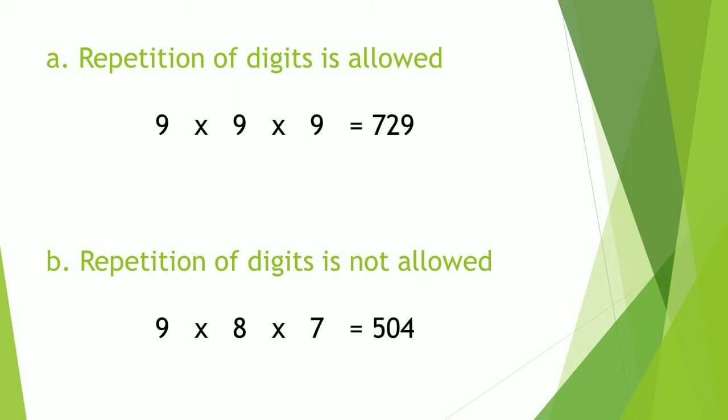If repetition of digits is not allowed, the first digit still uses any number from 1 to 9, so 9. For the second digit, since repetition is not allowed, we need to subtract one, making it 8. And for the third digit, since two numbers have been used, we have 7. So we multiply 9 times 8 times 7, which equals 504. There are 504 possible outcomes if repetition of digits is not allowed.